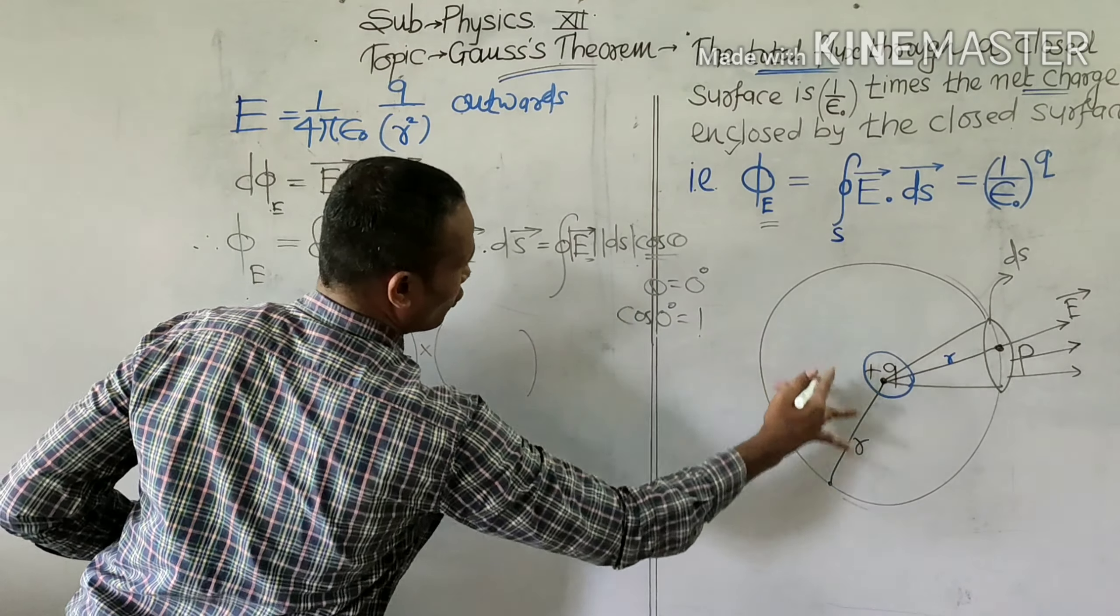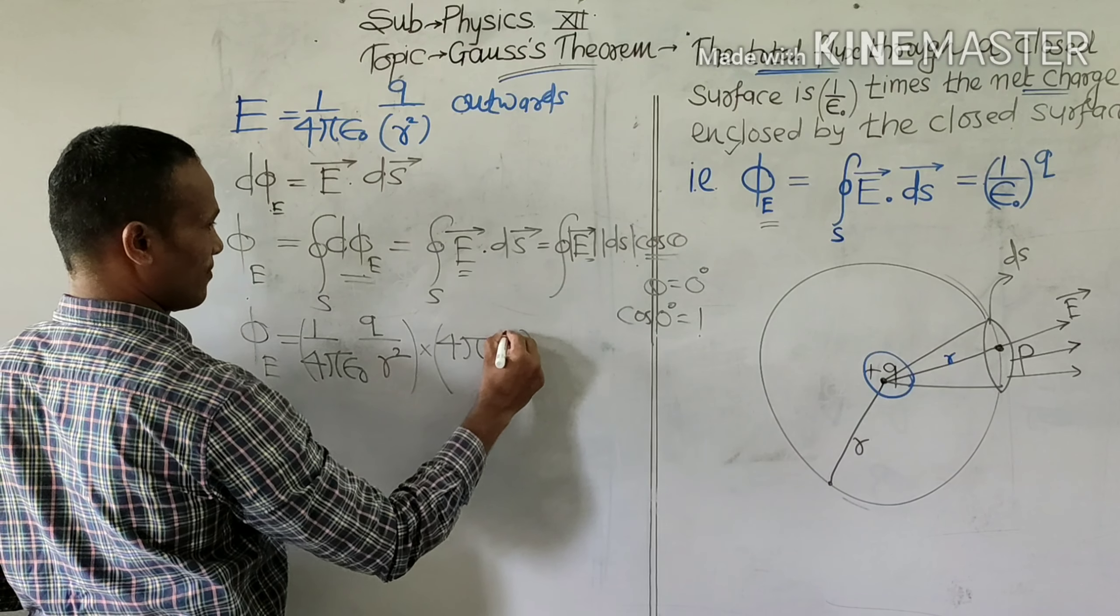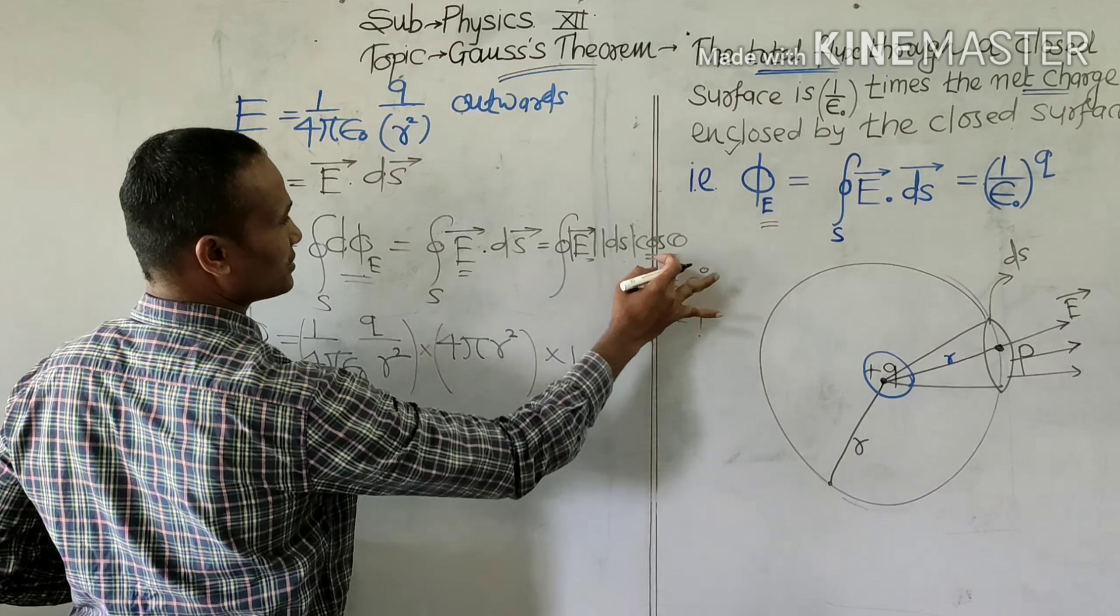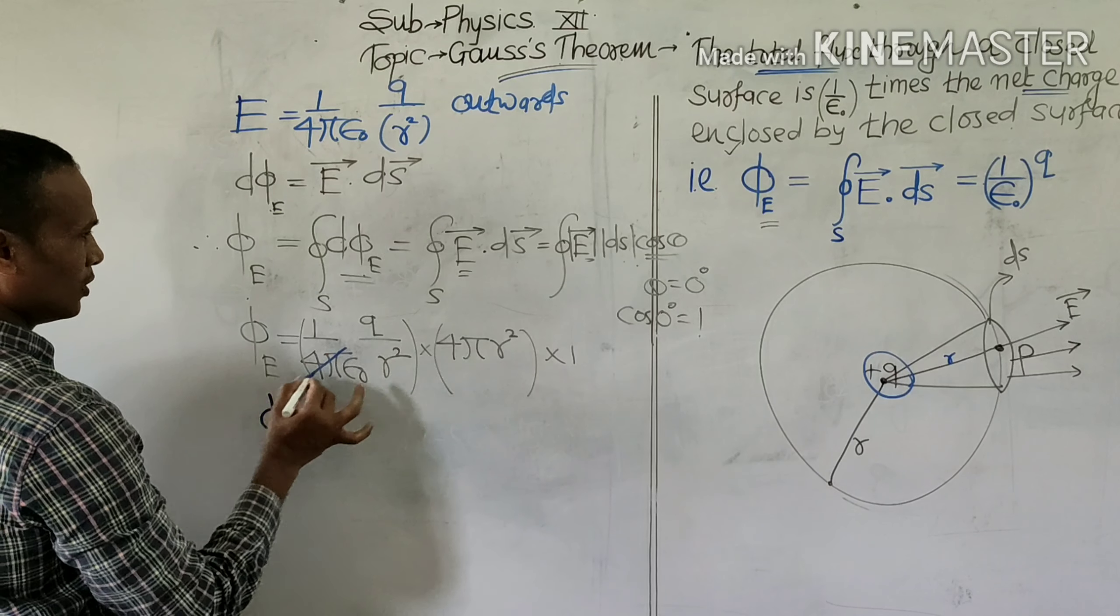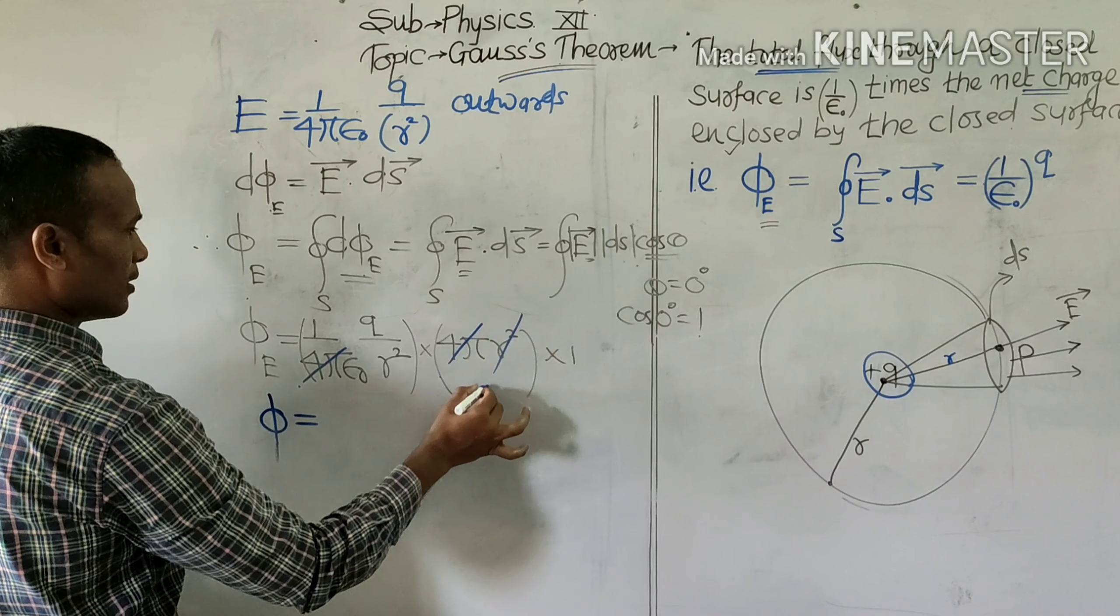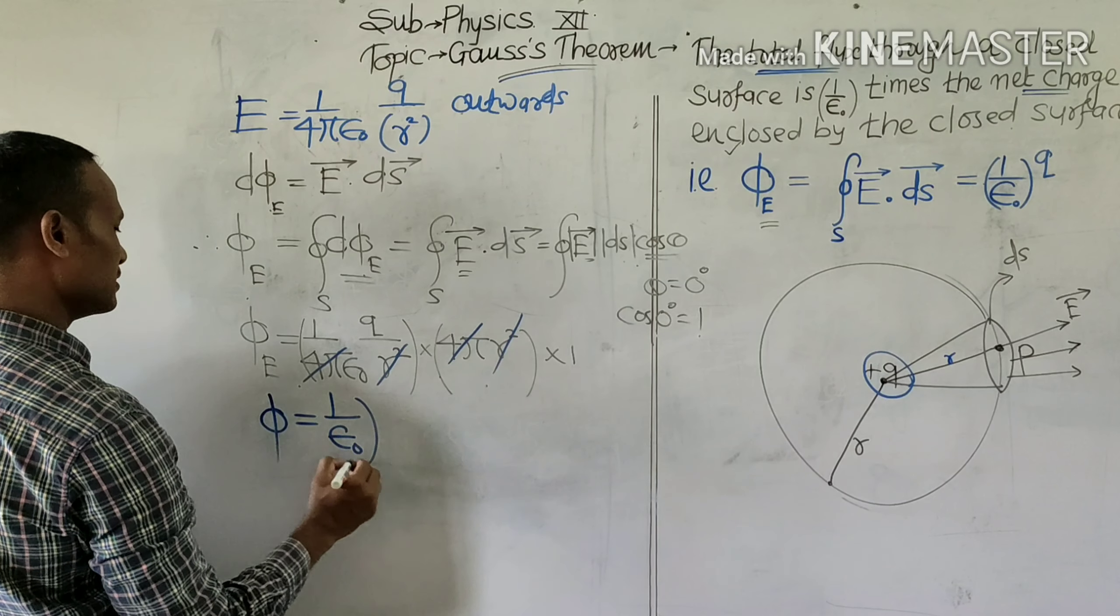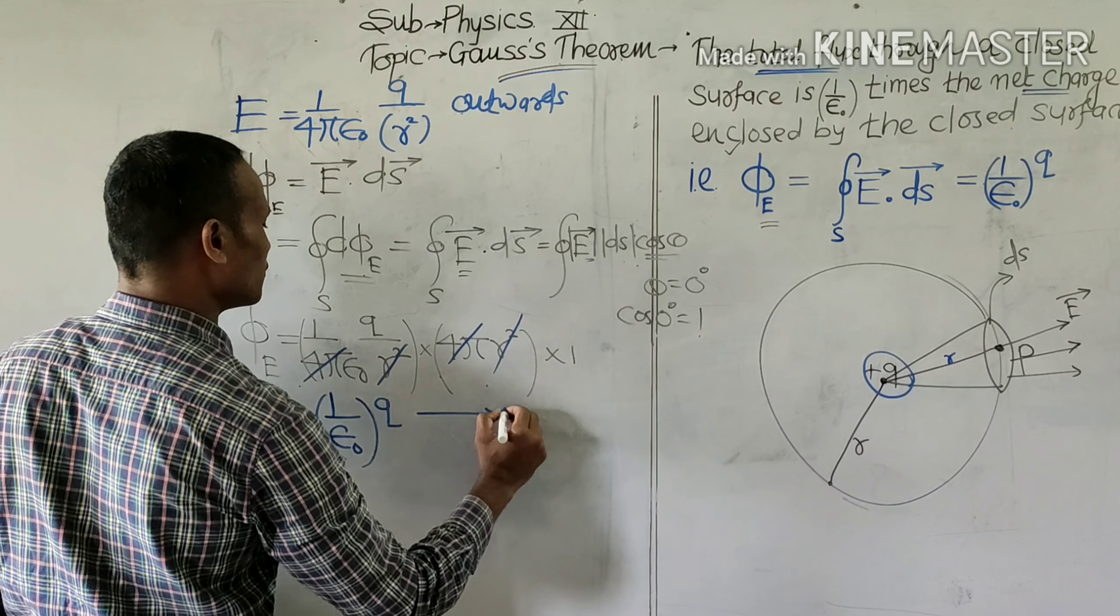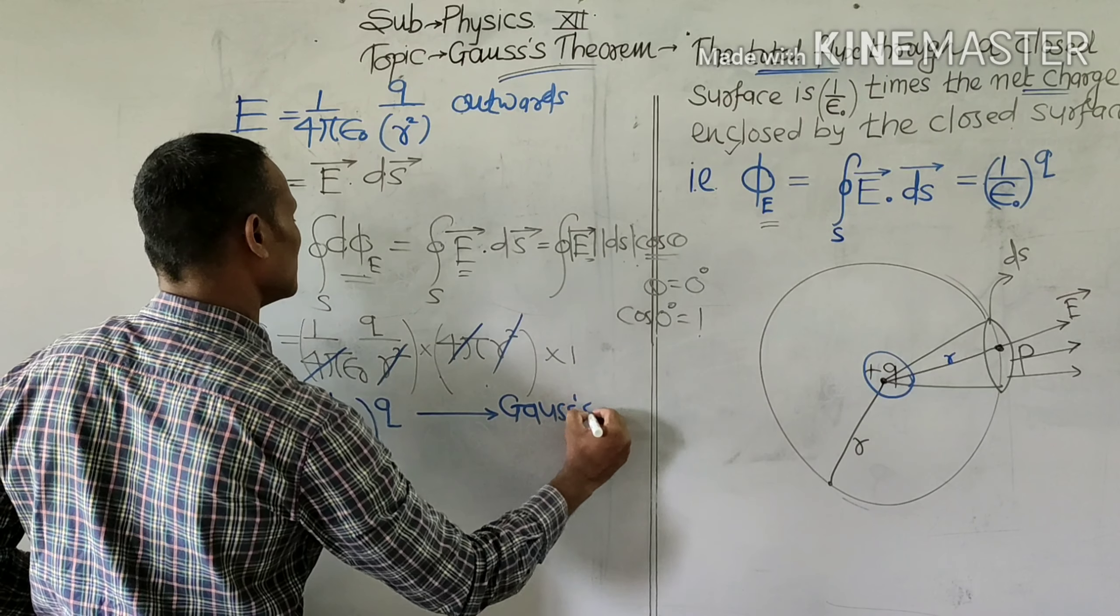Now, the whole surface area is 4πR², and cos 0 degree is 1. So finally we have Φ equals 1 upon 4πε₀ times Q times 4πR² upon R². So what is left is 1 upon ε₀ times the charge enclosed. And this is what Gauss's theorem.